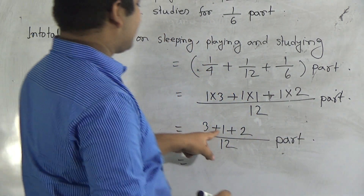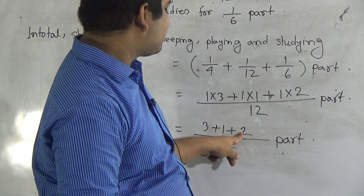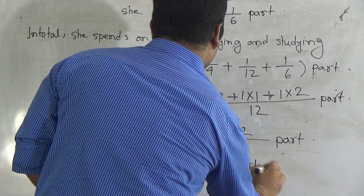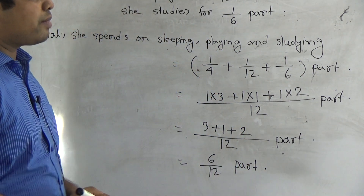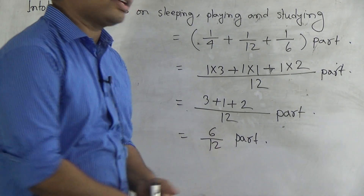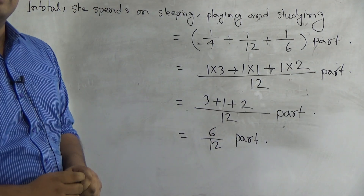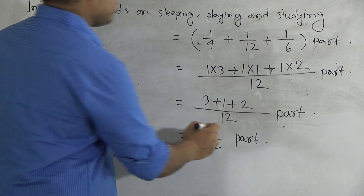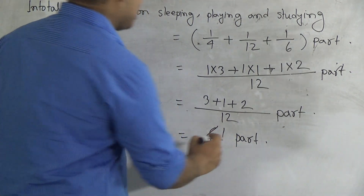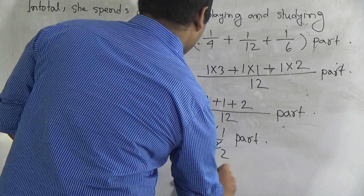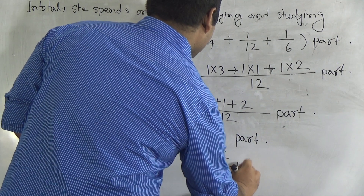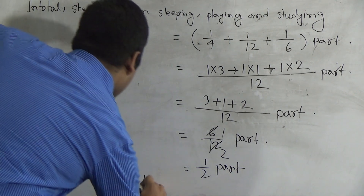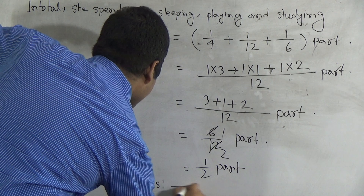Now we do addition: 3 plus 1 is 4, plus 2 is 6. So we get 6/12. Now we convert this fraction to its lowest term. Numerator is 6 and denominator is 12; both are divided by 6. 6 divided by 6 gives 1, and 12 divided by 6 gives 2. So the answer is 1/2. Question B is done.